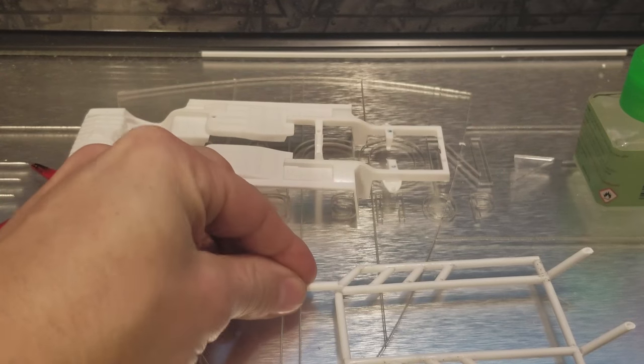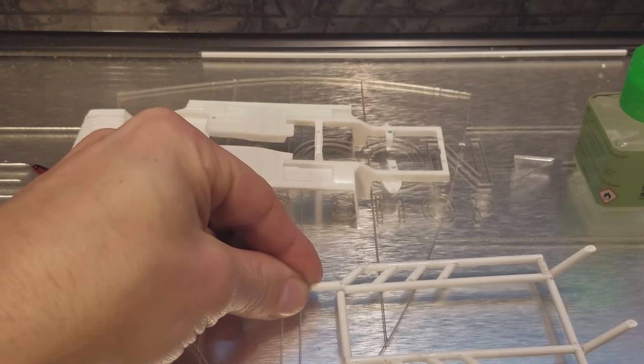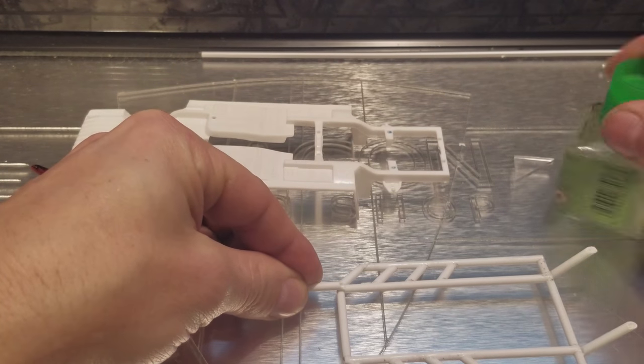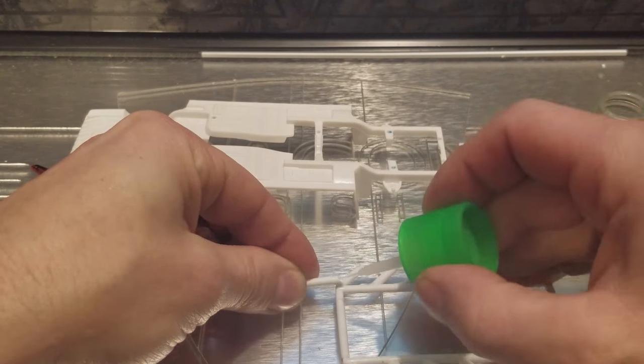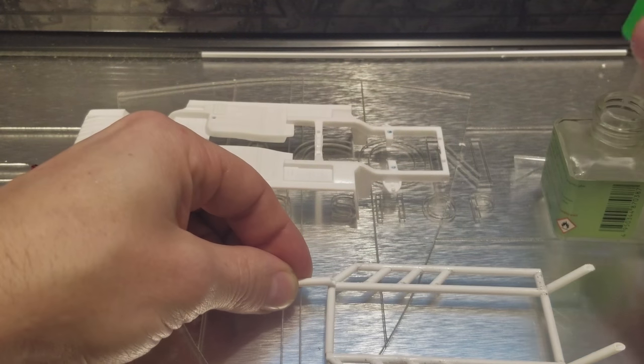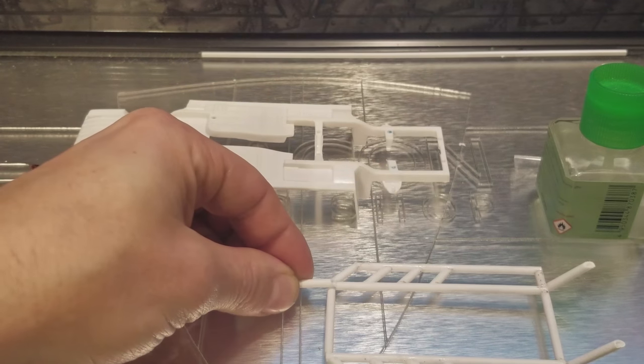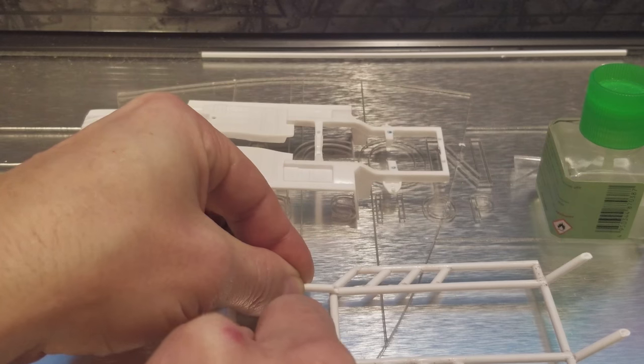Alright, so there we go, cut a nice little 45-degree angle, and that's what's going to lay here. So the same thing we're going to do, put a little bit of glue on there.